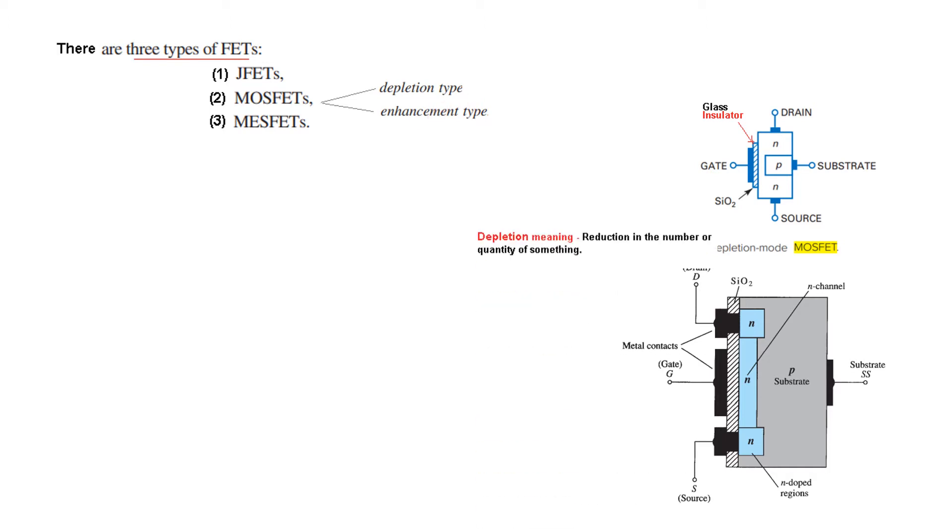Now in MOSFET there are two types. One is the depletion type and the other is enhancement type. And the depletion type is primarily depletion means we have to understand the meaning the reduction in the number or quantity of something. So basically here we reduce the number of electrons in the channels and that is why it is called the depletion type.